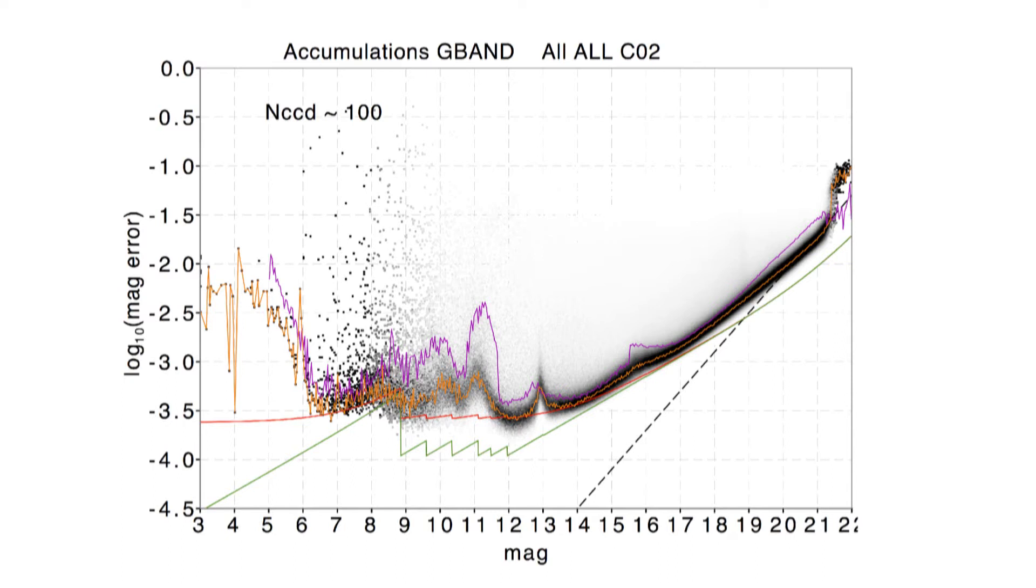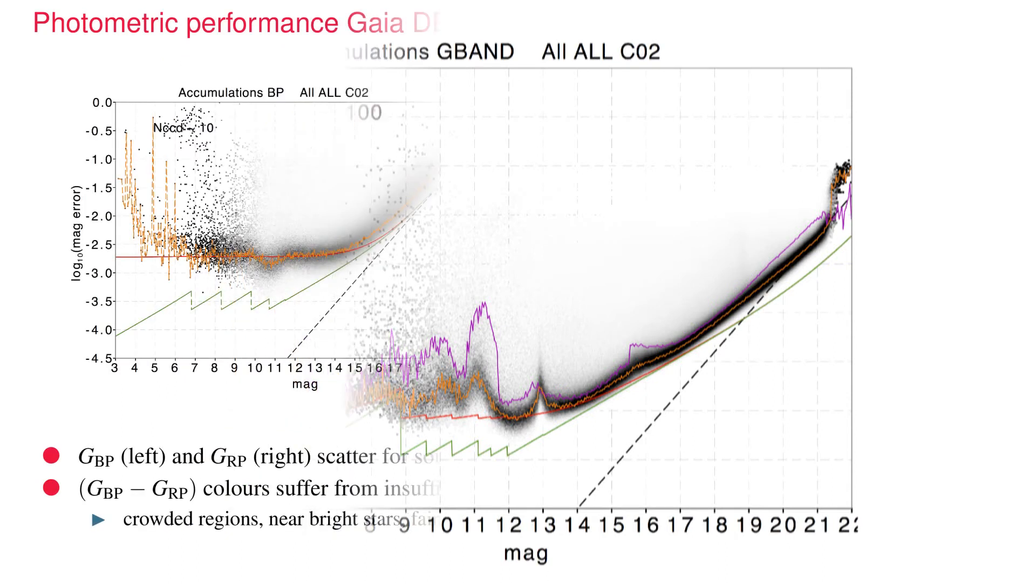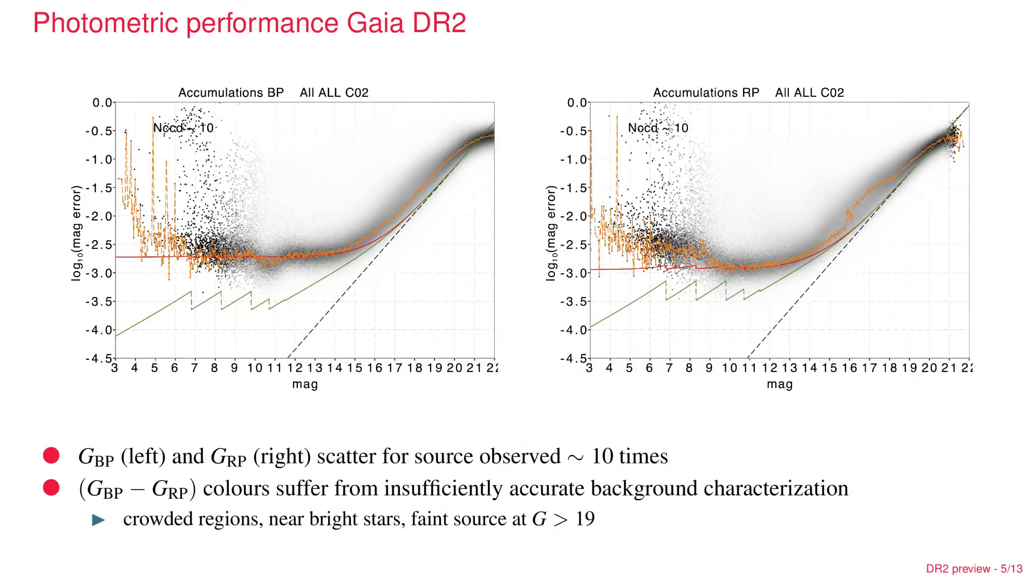This is for the G-band photometry. The important addition in this particular release is that we have also broadband photometry in the blue and in the red, for which you see the performances here. These performances have been already achieved basically for data release one, we didn't put them out at the time. The main point is that we now have for all the sources in the catalog, or almost all the sources, we have colors available, allowing us to characterize those stars.